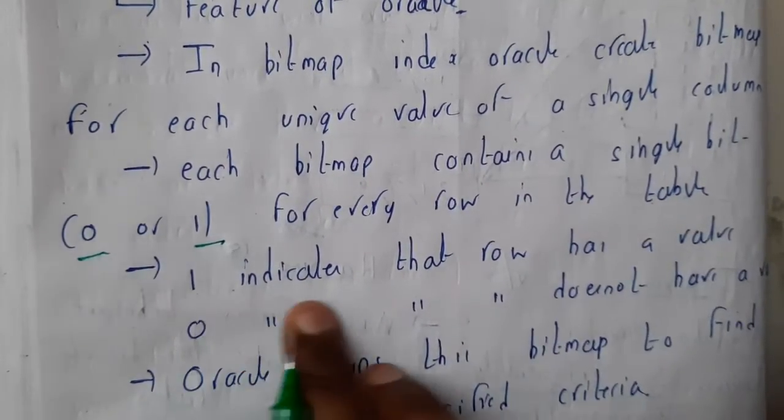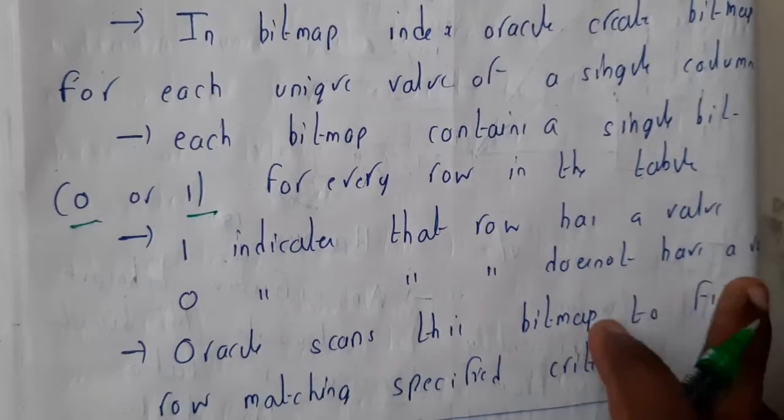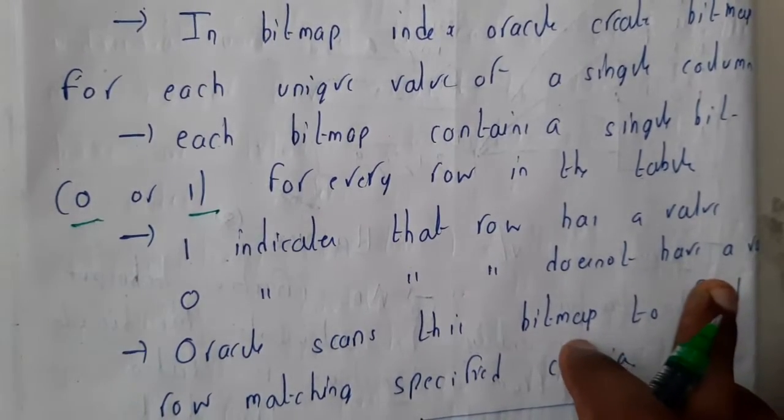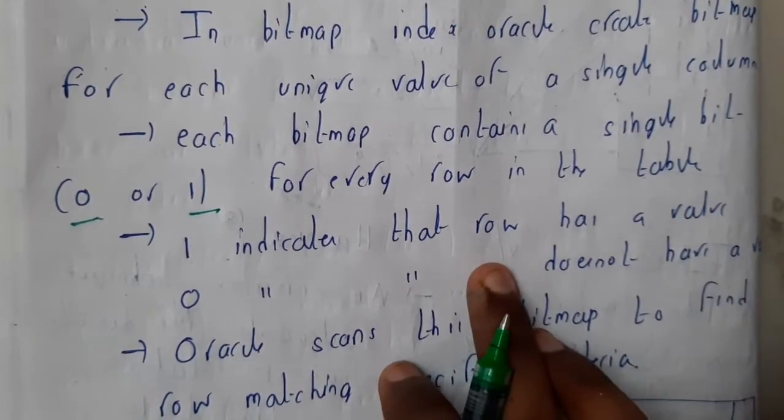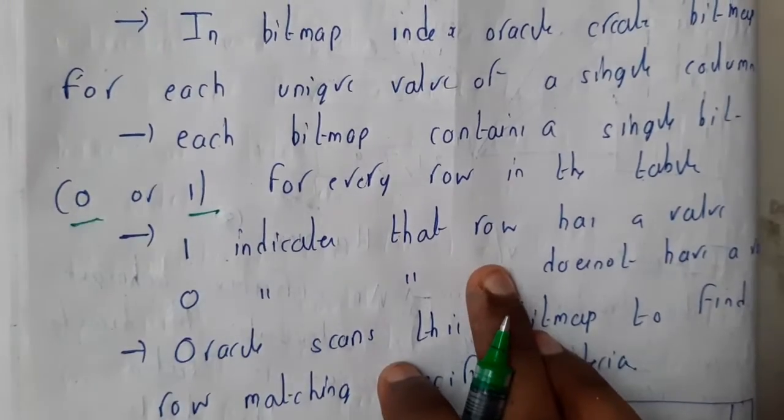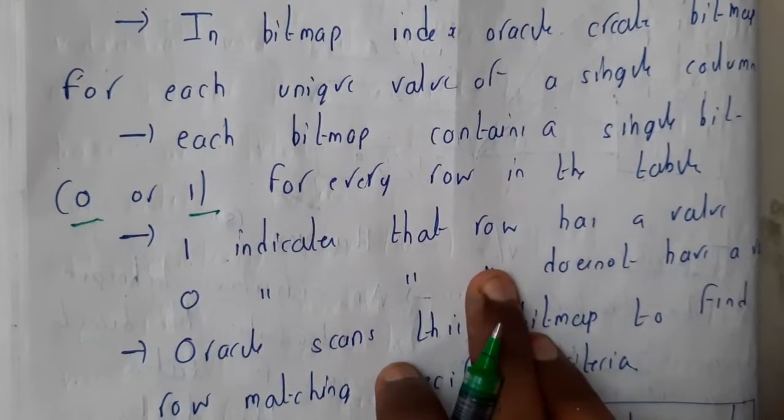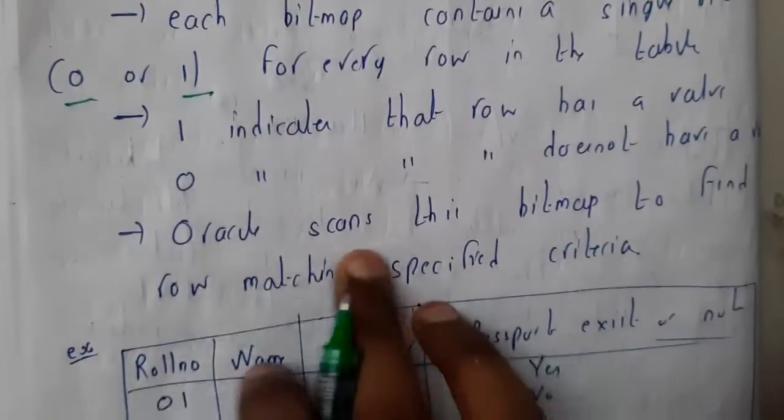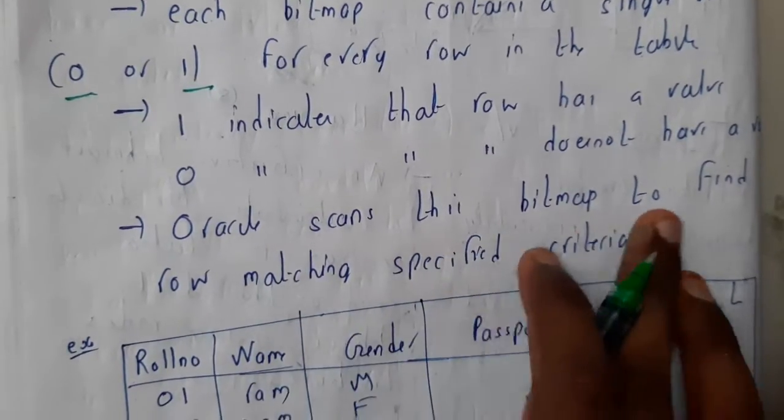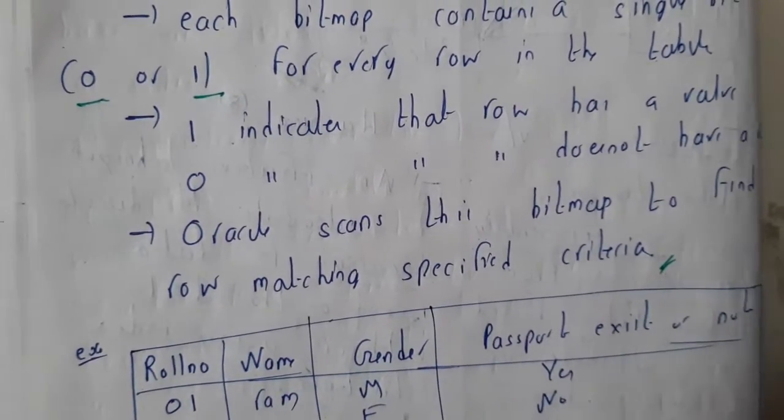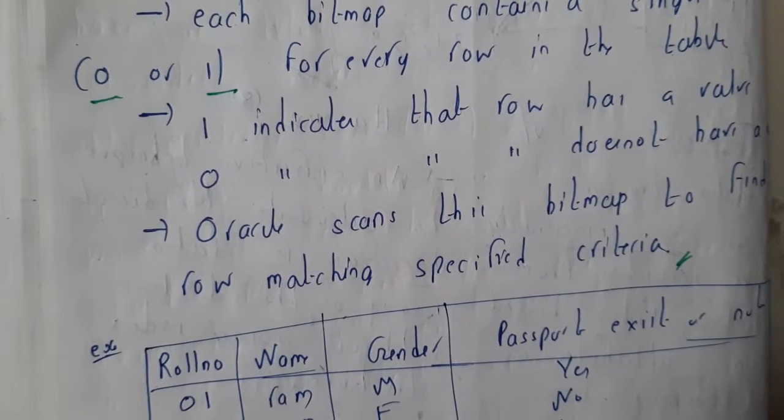Zero indicates that it does not have a value. So here you'll be understanding the concept, don't worry, you'll be clearly understanding it. Oracle scans these bitmaps to find the row matching. Whenever you are comparing with rows, let us assume you wrote a query 'select star from this employee belonging to this'.